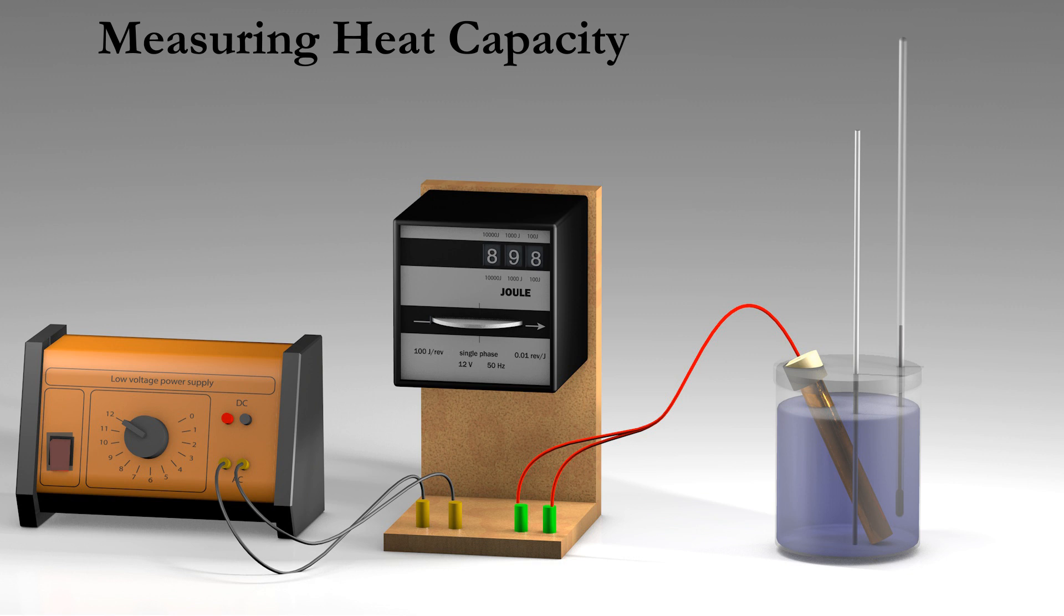Connect the heater to the joulemeter and the joulemeter to the power supply. Record the initial joulemeter reading, which is 89,800 joules, and the initial temperature of the lemon tea, which is 19 degrees Celsius.